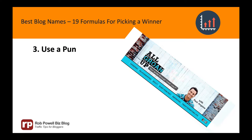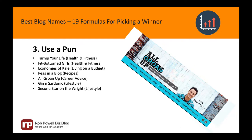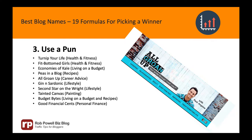Turnip your life. Fit Bottomed Girls. Economies of Kale. Peas in a Blog. All Grown Up. Gin and Sardonic. Second Star on the Right. Tainted Canvas. Budget Bites. Good Financial Sense. My Darling Lemon Thyme. And Planet of the Grapes.